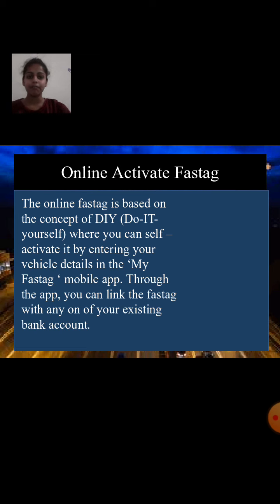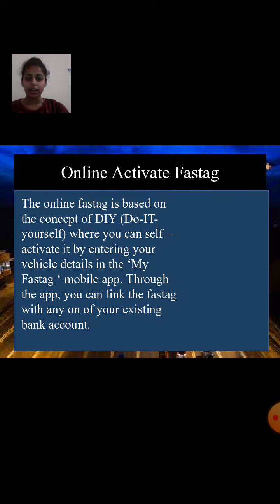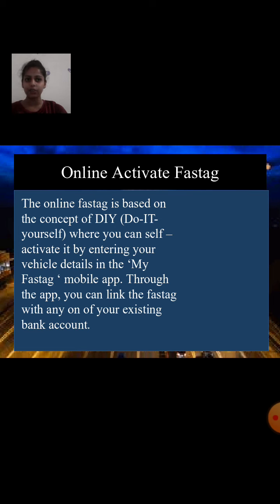Online activation of FASTag: The online FASTag is based on the concept of DIY — Do It Yourself — where you can self-activate it by entering your vehicle details in the My FASTag mobile app. Through the app, you can also link the FASTag with any of your existing bank accounts.